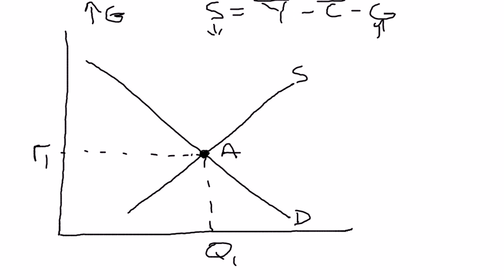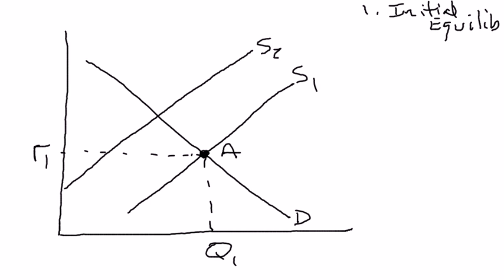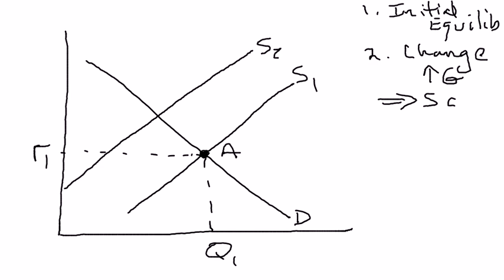That means the supply curve for loanable funds has to reflect a decrease in the quantity supplied of loanable funds. So if this is our initial supply curve, we know the supply curve has to shift to the left — we'll call it S2. We started off at initial equilibrium point A, and then the change was an increase in government spending, which caused the supply curve to shift left.